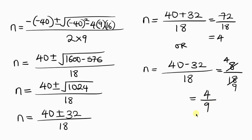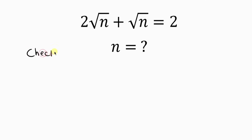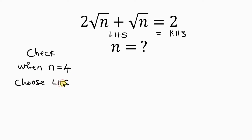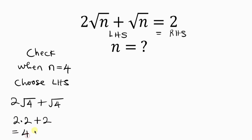Now we're going to check our answers. Checking n equals 4 on the left hand side: 2 times the square root of 4, plus the square root of 4, equals 2 times 2 plus 2, which is 4 plus 2, equals 6. This is not equal to the right hand side, which is 2, so we reject this answer.